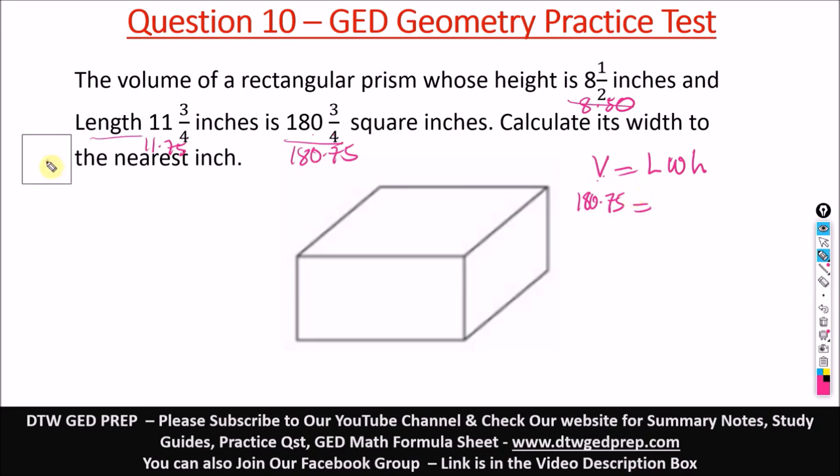We're given the length as 11.75. We need to find the width, so that's our unknown W. The height H is 8.50. To solve for width and make it standalone, we divide both sides by 11.75 × 8.50.